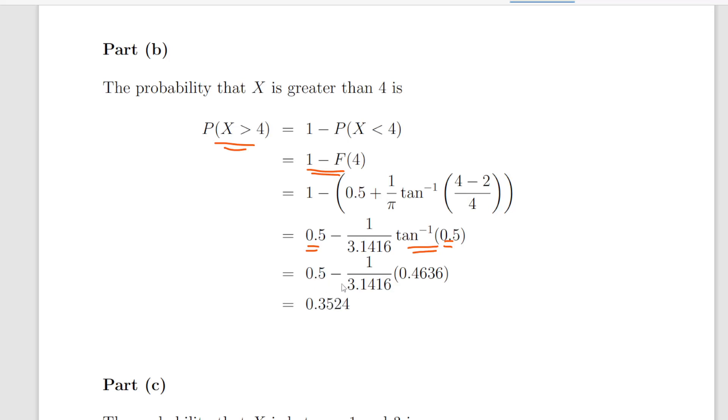Working that out, we get 0.5 times 0.4636 divided by pi, 3.1416, and that gives us 0.3524.